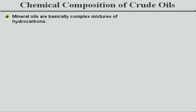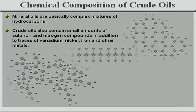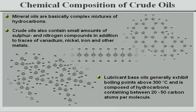Mineral oils are basically complex mixtures of hydrocarbons — that is, composed of carbon and hydrogen atoms joined together in various molecular configurations. Crude oils also contain small amounts of sulphur and nitrogen compounds, in addition to traces of vanadium, nickel, iron and other metals. Lubricant base oils generally exhibit boiling points above 300 degrees Celsius and are composed of hydrocarbons containing between 20 to 50 carbon atoms per molecule.